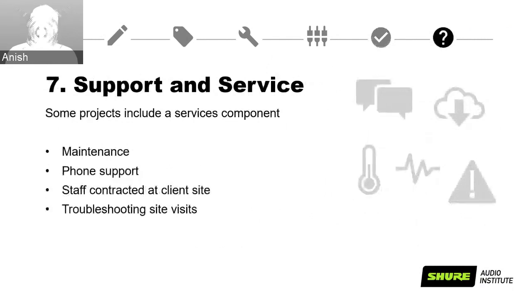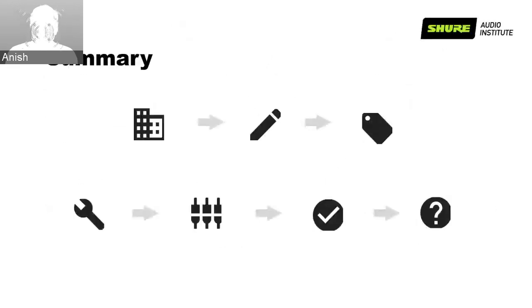The last phase is support and service. Some projects include a service contract after installation to help the client maintain and support the rooms — this can take the form of maintenance, phone support, contracted staff on site, troubleshooting visits, or an SLA-based arrangement. This gives us a good idea of the lengthy and collaborative nature of a room design project. Now let's look at ways to get the best data for starting the project — the needs assessment.